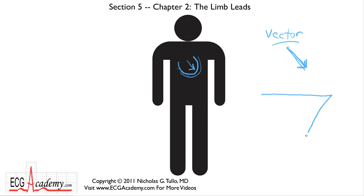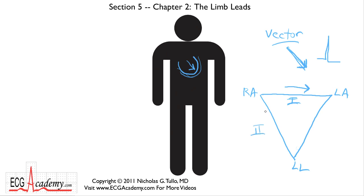We talked about Einthoven's triangle, and Einthoven decided that he was going to use the right arm, the left arm, and the left leg to create this electrocardiographic view of the heart. Remember that Lead I is recording anything that moves from the right arm to the left arm — that will appear upright in the cardiogram. Lead II records signals traveling from the right arm to the left leg, and Lead III goes from left arm to left leg. Any signals going in these directions will be upright in the ECG lead.